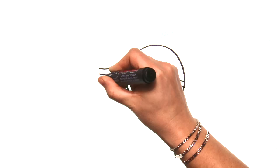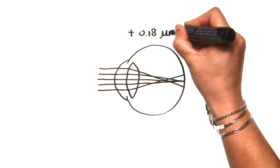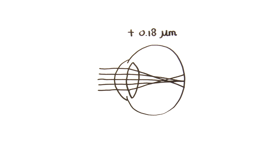The amount of spherical aberration varies across people. However, in 92% this aberration is positive. On average, the spherical aberration of the human eye is approximately plus 0.18 micrometers at a pupil size of 6 millimeters.